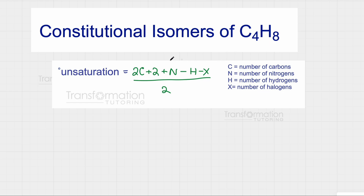The first thing you can do is calculate degrees of unsaturation to figure out how many double bonds or rings your molecule has. For degrees of unsaturation: two times the number of carbons plus two, plus the number of nitrogens, minus hydrogens, minus halogens, all divided by two.